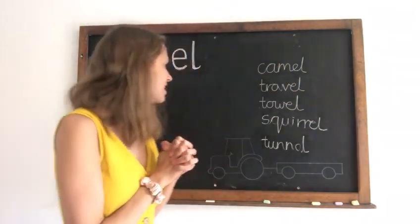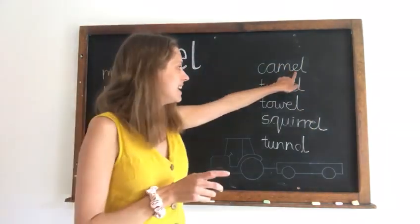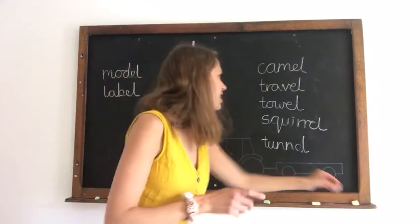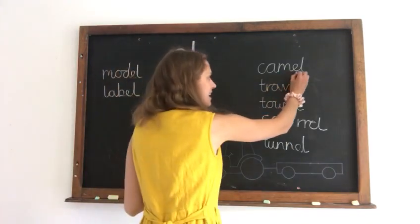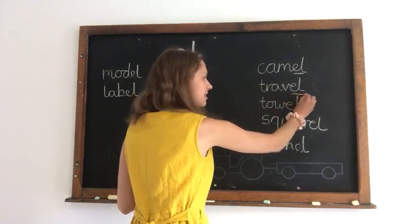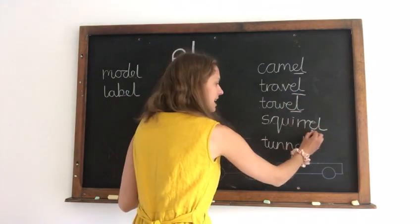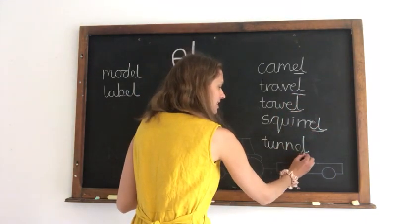So here are our spellings. So, to look at our E-L, this is our word ending. So we've got E-L, the sound 'L' at the end of each of these words.